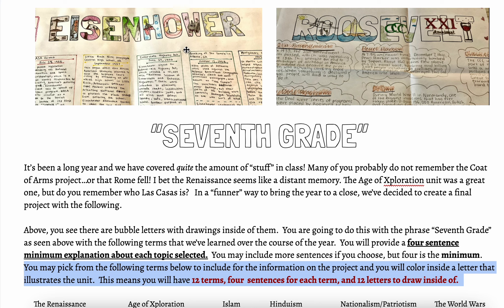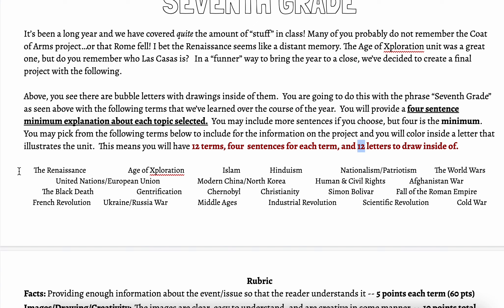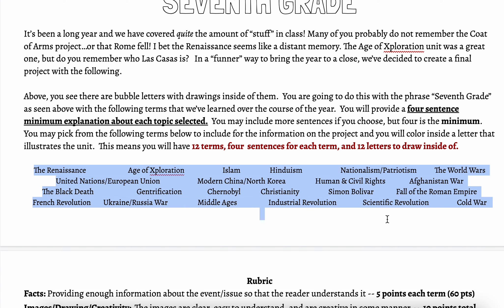And then you're going to color inside each letter. So this means you have 12 terms, four sentences for each term, and 12 letters to draw inside of. Now, here are your topics.